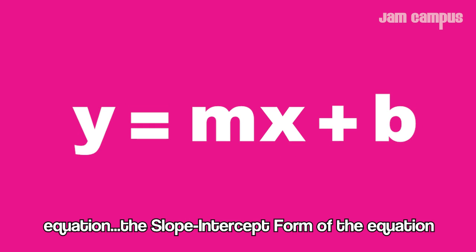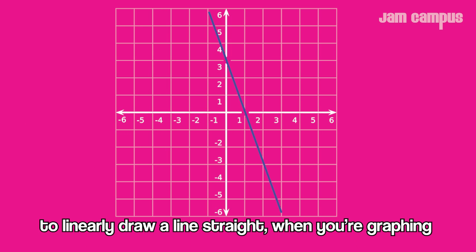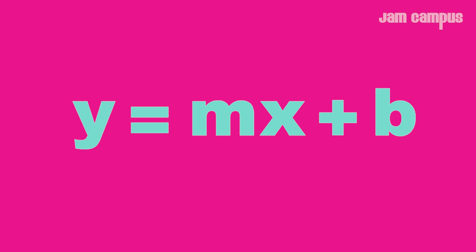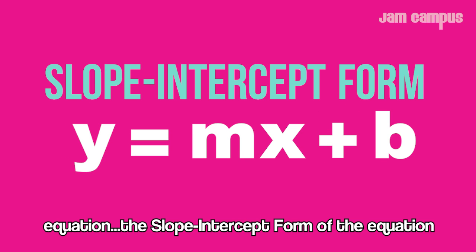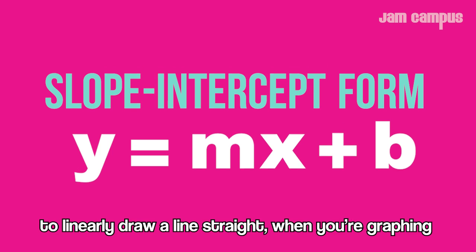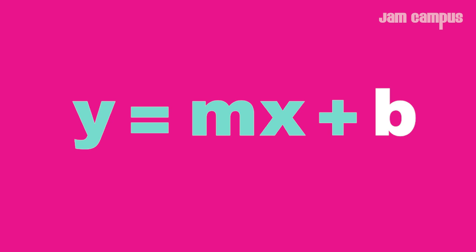Equations! Slope-intercept form of the equation: to linearly draw a line straight when you're graphing, y = mx + b.